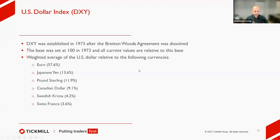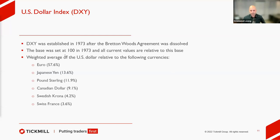A quick history of the dollar index: it was established in 1973 after the Bretton Woods agreement was dissolved. Under Bretton Woods, gold was the basis for the US dollar's value and all other currencies were pegged to it. When that agreement was dissolved, the dollar index was established with a base value of 100. That is why you see the dollar index ranging from a high of around 110–115 to a low of maybe 90 or 80 — all referenced to the base value of 100 established in 1973.